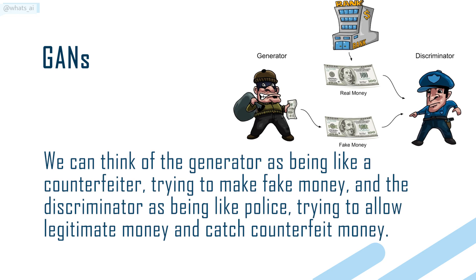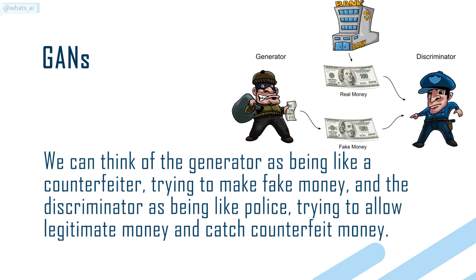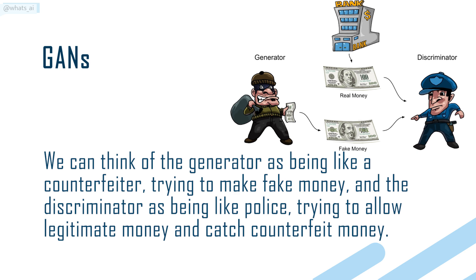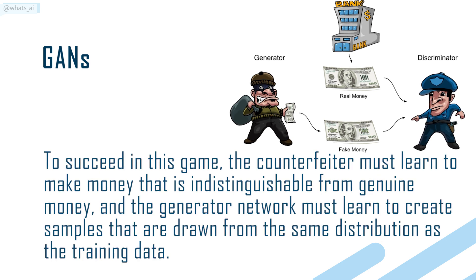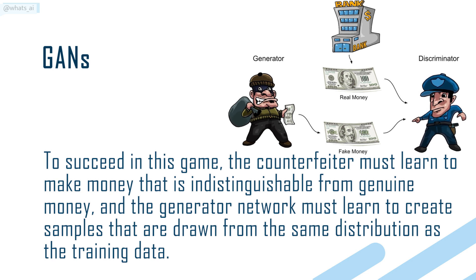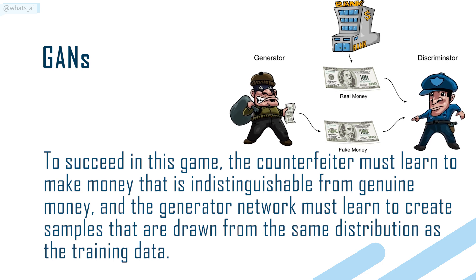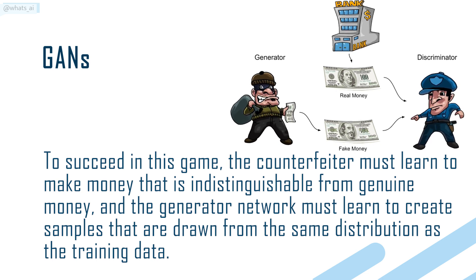We can think of the generator as being like a counterfeiter trying to make fake money, and the discriminator as being like police trying to allow legitimate money and catch counterfeit money. To succeed in this game, the counterfeiter must learn to make money that is indistinguishable from genuine money, and the generator network must learn to create samples drawn from the same distribution as the training data.